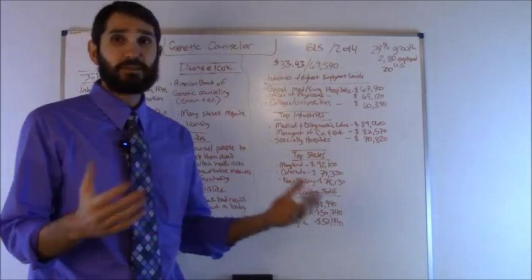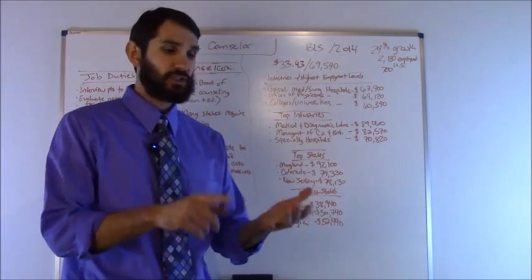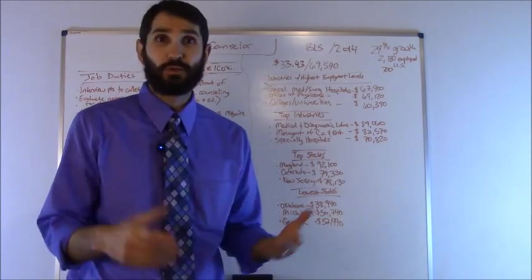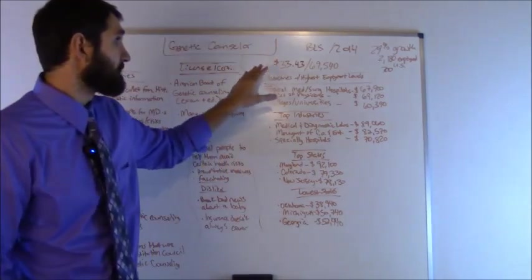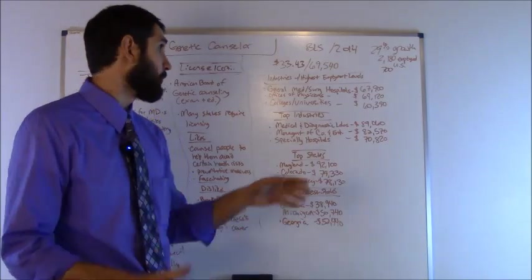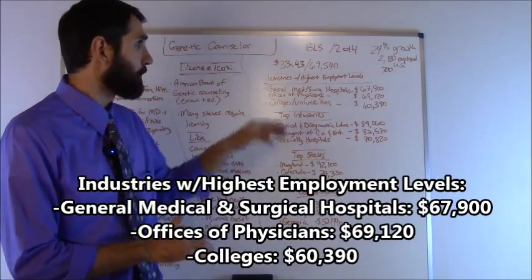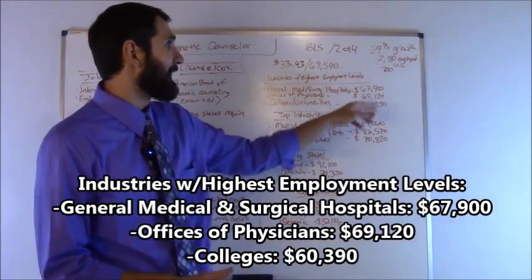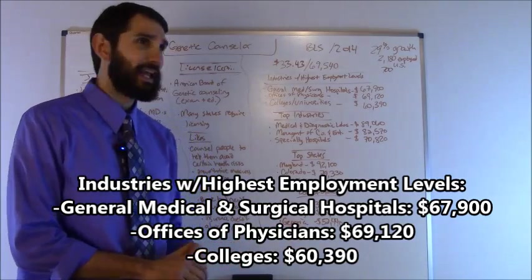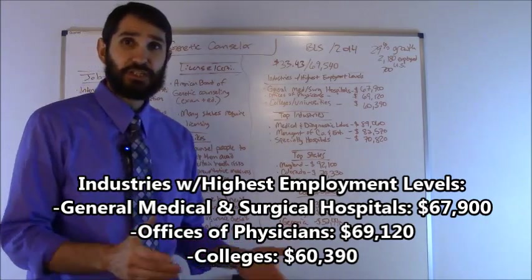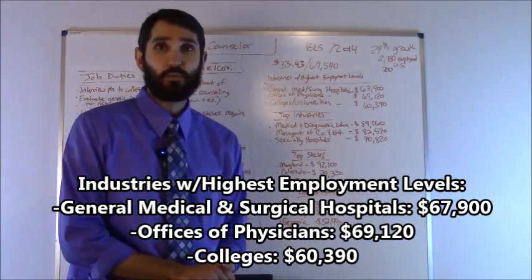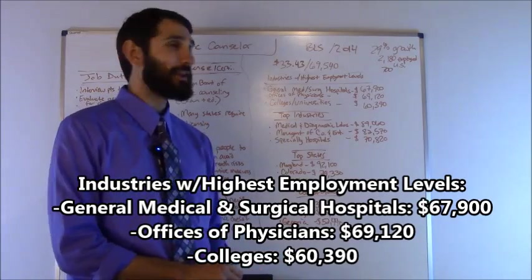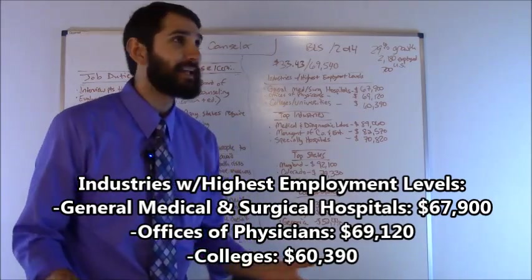Let's talk about some of those factors that can influence your salary, such as the industry in which you work and the state in which you live. The industry with the highest levels of employment was general medical and surgical hospitals at $67,900 average salary. Offices of physicians came in at number two at $69,120, and then colleges and universities came in at number three, $60,390.